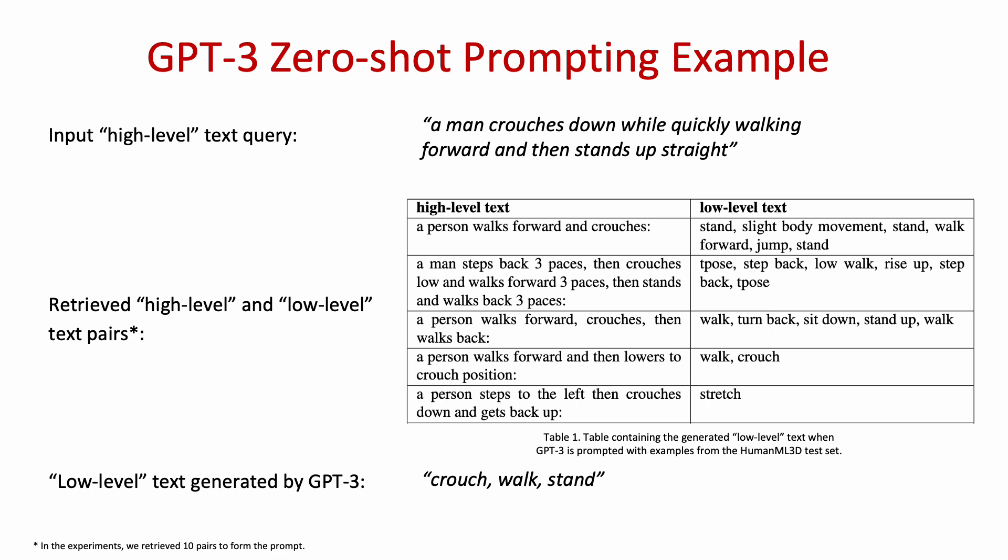With input high-level test query, a man crouches down while quickly walking forward and then stands up straight. These high-level and low-level pairs shown in a table are retrieved since the high-level texts in these pairs are closest to the input query. The GPT-3 prompt is formed by concatenating the pairs and the input text query. GPT-3 then outputs a low-level text: crouch, walk, stand, which will be used as a low-level description for our inference.